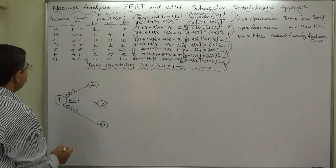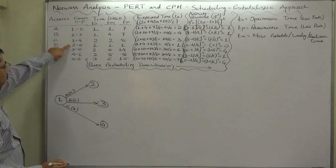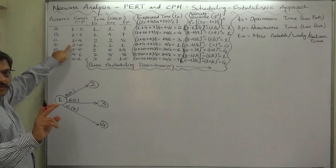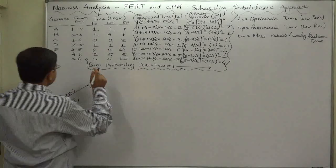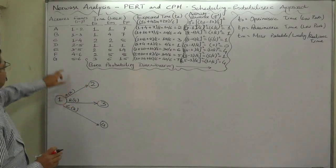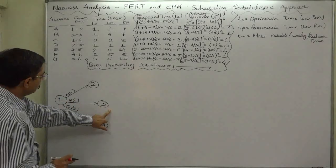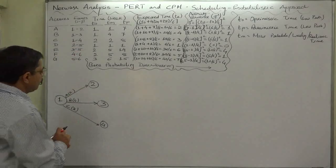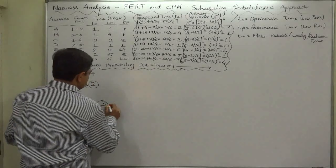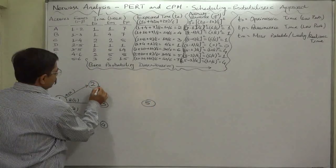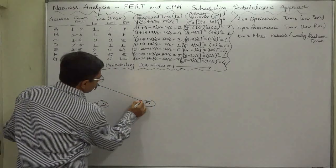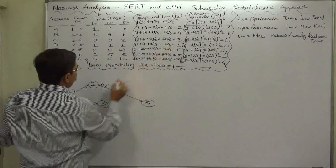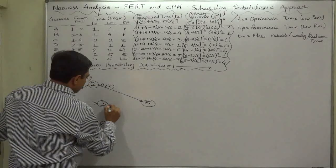Now activity d starts from node number two, that means it is the successor activity of a, or a is predecessor of d. And e starts from node number three. D and e both end at node number five. So we have to show d something like this taking time of one week, and e like this taking time of six weeks.